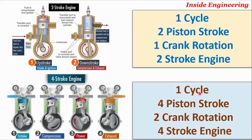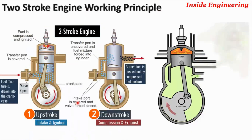On the other side, in a four-stroke engine, one engine cycle is completed with the help of four piston strokes — that's why it's called a four-stroke engine. In a two-stroke engine, the crankshaft completes one full revolution for two piston strokes, or one engine cycle.